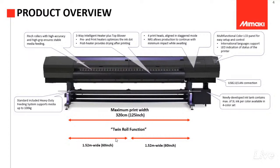Untuk maximum print-nya ini adalah sekitar 3,2 meter. Terus di sini banyak fitur-fitur yang baru. Contohnya seperti panel, panel di sini sudah full color, jadi sudah user-friendly. Terus juga dia sudah bisa LAN connection, terus juga dia sudah ada tension bar-nya, jadi sudah bisa membaca ketegangan si media. Print head-nya ada empat, ada NLS seri terbaru.